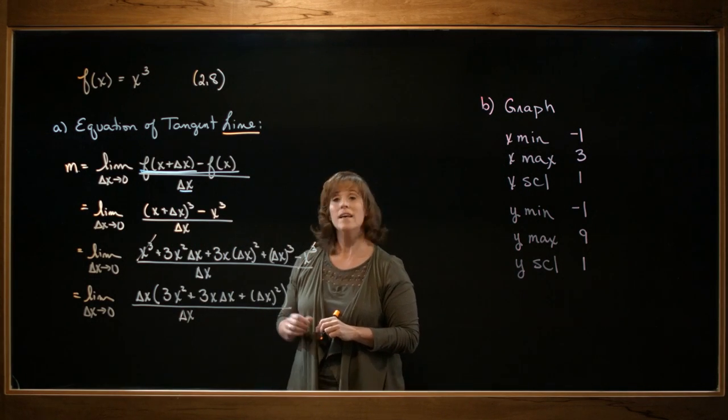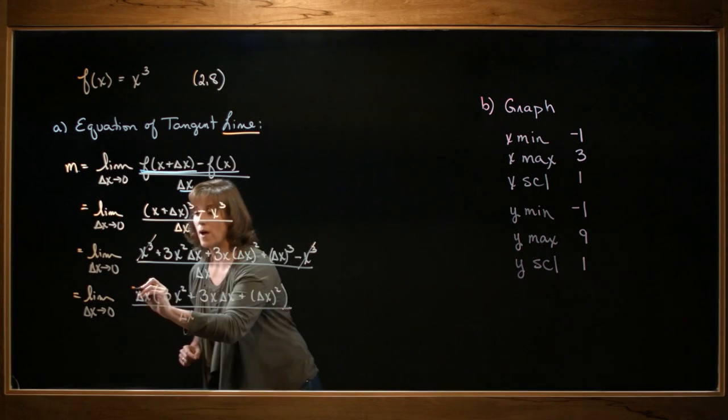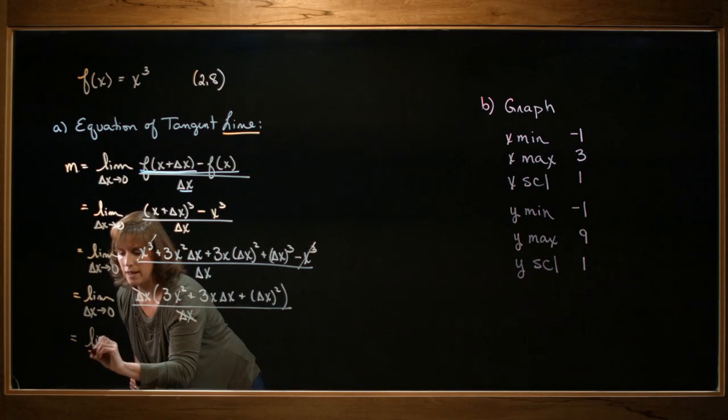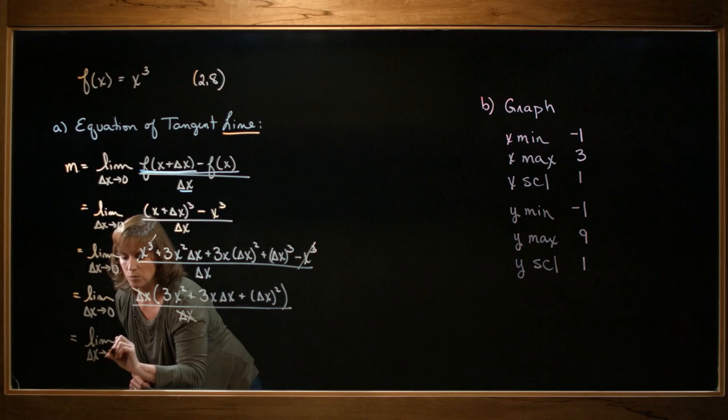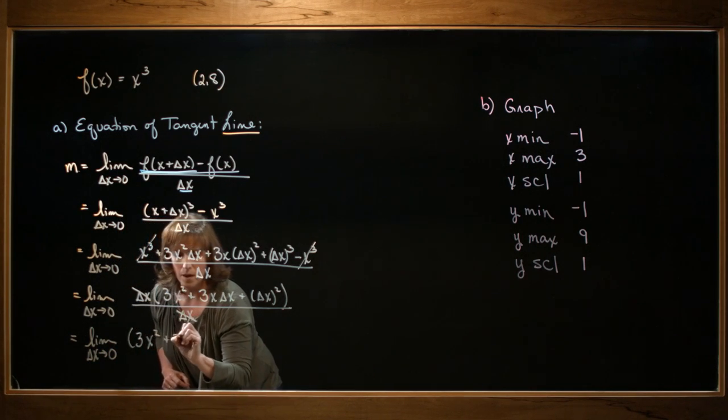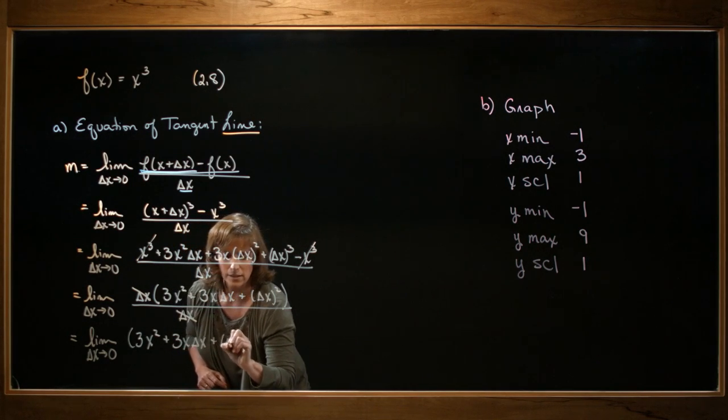Now I notice that delta x is a factor of both the numerator and the denominator, so I can cancel them, which leaves me with the limit delta x approaches 0 of 3x squared plus 3x delta x plus delta x squared.